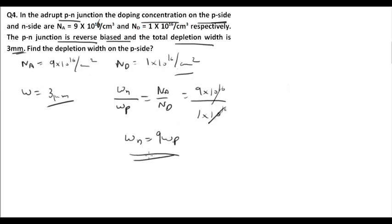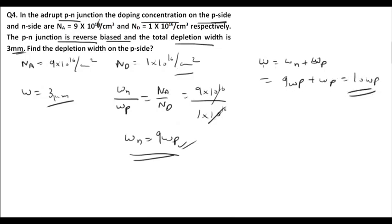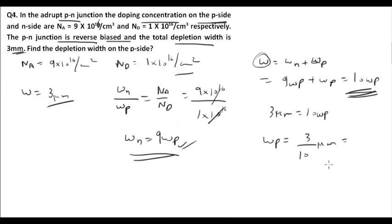The total depletion width W = Wn + Wp = 9·Wp + Wp = 10·Wp. Since W = 3 μm, we get Wp = 3/10 = 0.3 μm. This is the depletion width on the p-side. This is how we calculate the depletion width.